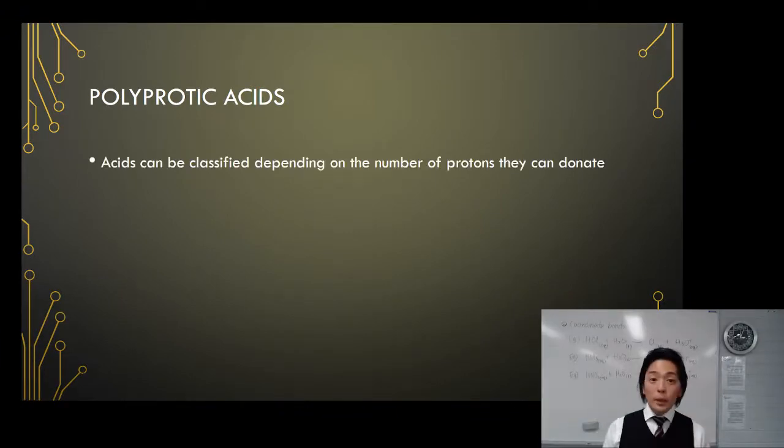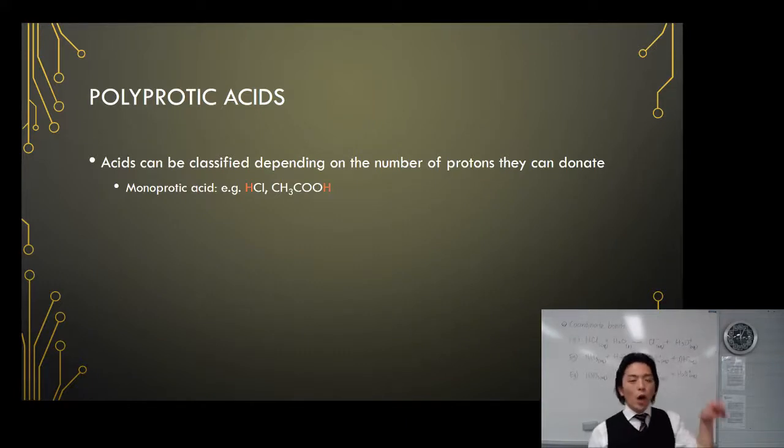So what do we mean by polyprotic acids? Acids can be classified depending on how many protons can be donated. For example, monoprotic acid means it has one proton that can be donated, like HCl which only has one proton, or CH3COOH acetic acid or ethanoic acid. Ethanoic acid has CH3COO as the acetate ion, and it's usually bonded to one hydrogen that can come off as an acid.